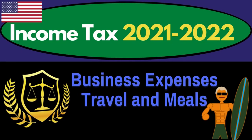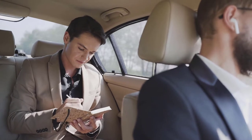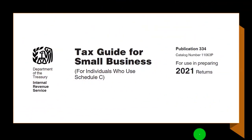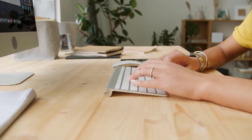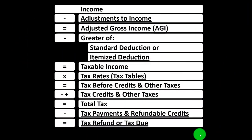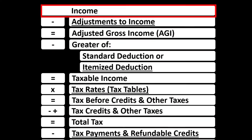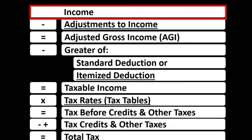Get ready to get refunds to the max, diving into Income Tax 2021-2022 business expenses — travel and meals. Most of this information can be found in Publication 334, Tax Guide for Small Business, Tax Year 2021. The income tax formula starts with Line 1 Income, supplemented by another schedule — basically an income statement with income and expenses.